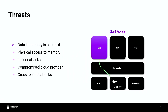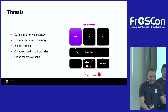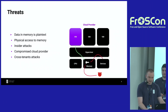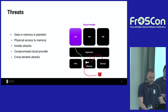What threats are we facing in the cloud? We have good protection during transit — we can use TLS or a VPN. We also have good protection at rest — we can use full disk encryption. But for processing, we need to decrypt our data, and at that point all our data is stored in plain text in main memory. Anyone with physical access to the machine could remove the memory module and read out our secrets or mount a malicious device.